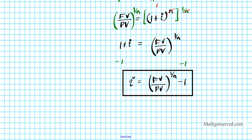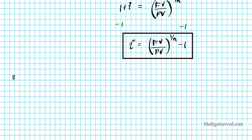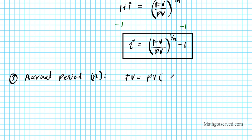Now let's take a look at the last derivation, which is for the accrual period — derivation number 3. This is N, the accrual period, also called the number of periods. We want an explicit formula for computing N. Let's start with the original formula: future value equals present value times 1 plus i raised to the nth power. The goal is to isolate this exponent, N.